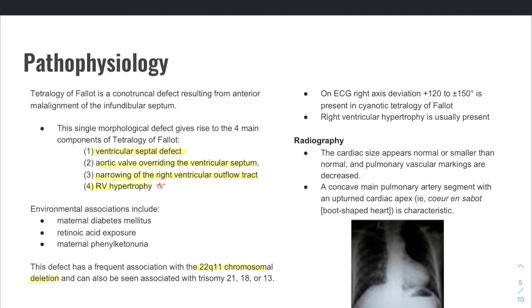We mentioned that you're going to have a finding of right axis deviation, and that's secondary to your right ventricular hypertrophy and greater than 110 degrees as well. So this is just zooming in on if you're between 100 and plus 120 to plus or minus 150, that might present in cyanotic TOF. And again, right ventricular hypertrophy is going to be present and you can catch that on your ECG.